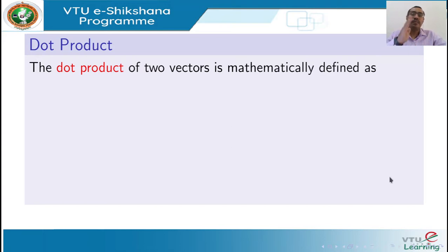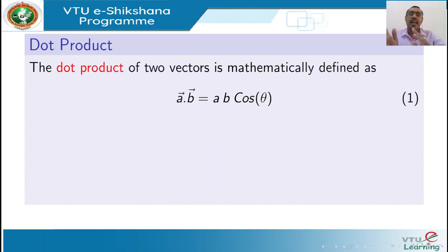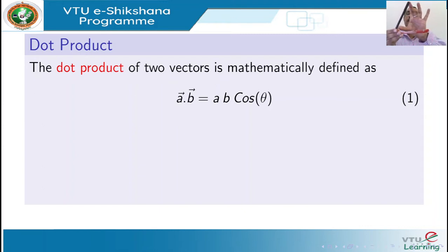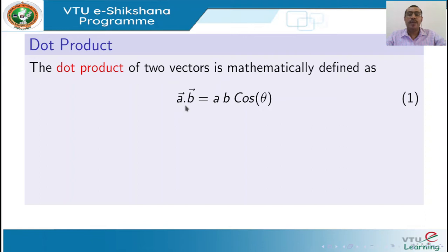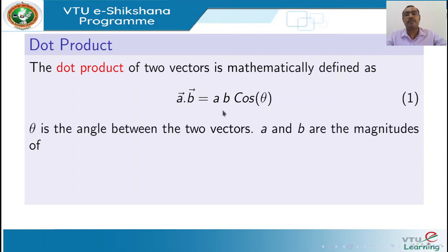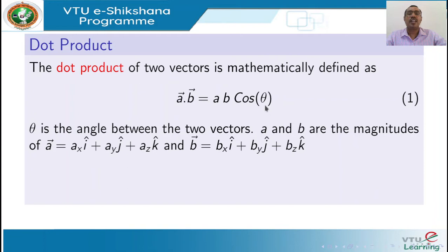The dot product of two vectors is mathematically defined as follows. Consider two vectors A and B acting at an angle theta, where theta is the angle between the two vectors. Here, 'a' is the magnitude of vector A and 'b' is the magnitude of vector B. The dot product is given by: vector A · vector B = a·b·cos(theta). Since a, b, and cos(theta) are all scalars, the dot product of two vectors is a scalar quantity.